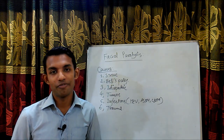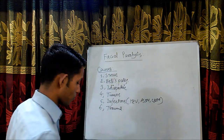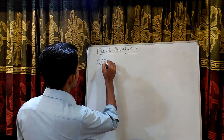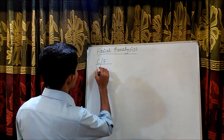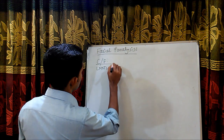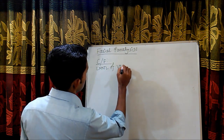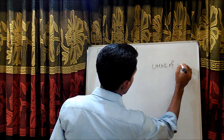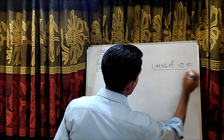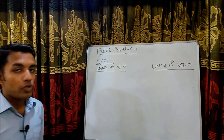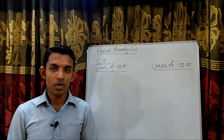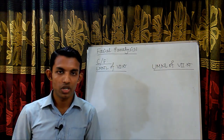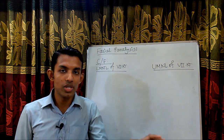Now, what are the clinical features of facial paralysis? There are two types: one is upper motor neuron lesion of the facial nerve, and another one is lower motor neuron lesion of the facial nerve. Now what are the clinical features of these two types?